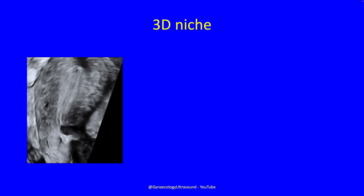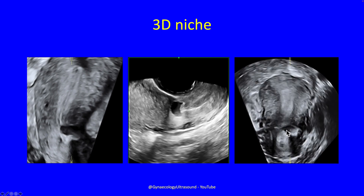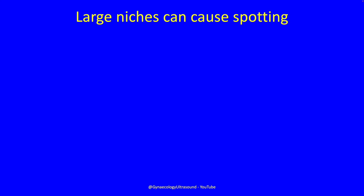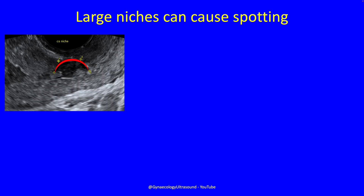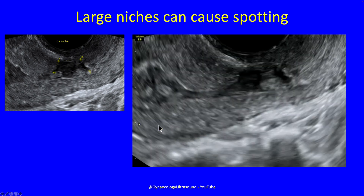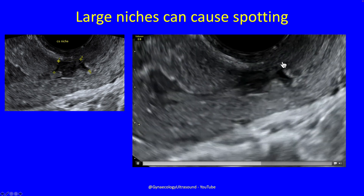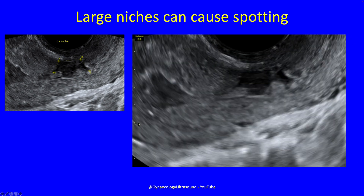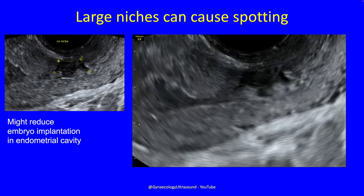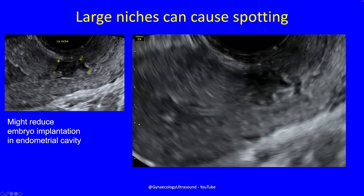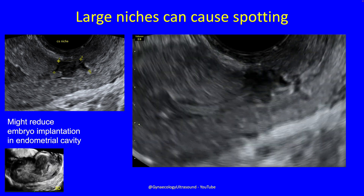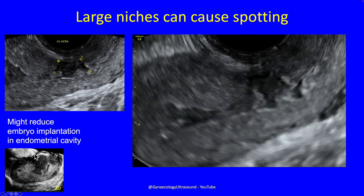You can do 3D on a niche as well — it's not super helpful, but you can see the niche in the longitudinal and transverse planes. The transverse plane is quite useful for showing the extent of the niche laterally. Large niches can cause spotting because in this niche it's almost impossible to see any myometrium overlying it, and you can see menstrual fluid and clot literally sloshing in and out. The fluid can collect and then trickle out over the next few days after the period has finished, and you can imagine how this fluid might reduce embryo implantation in the endometrial cavity. There's a 3D image showing this tremendous bulging anteriorly.